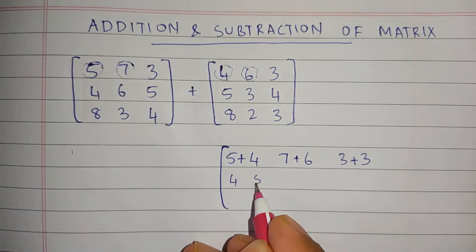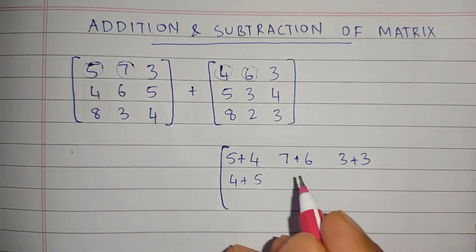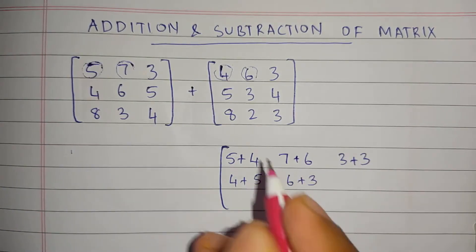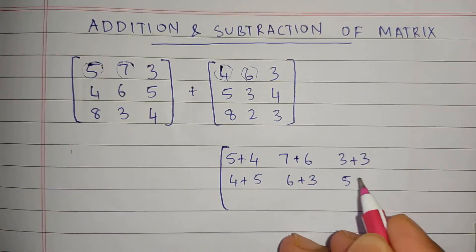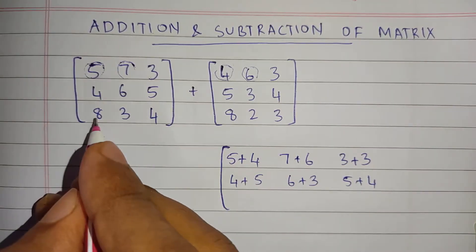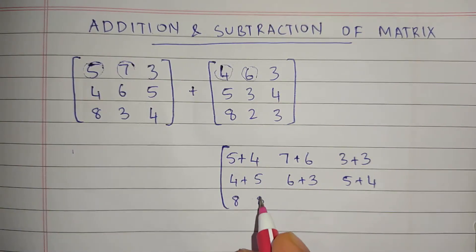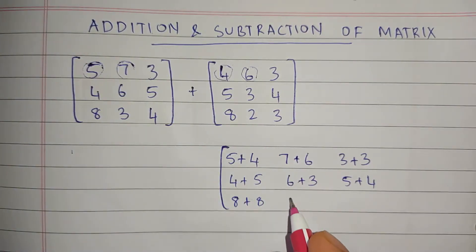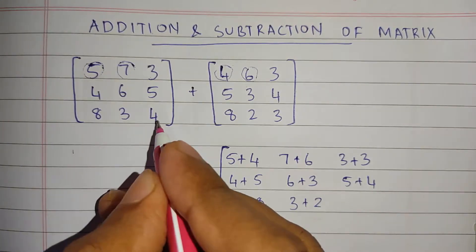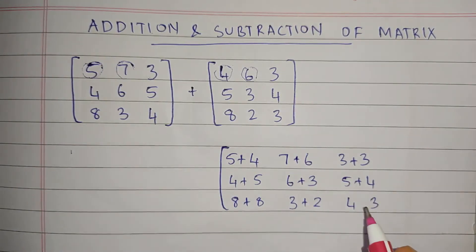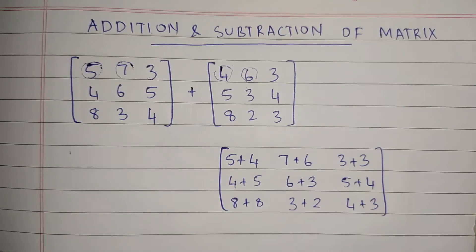6 plus 3, 5 plus 4, 8 plus 8, 3 plus 2, 4 plus 3. Now for the result, it's easy.